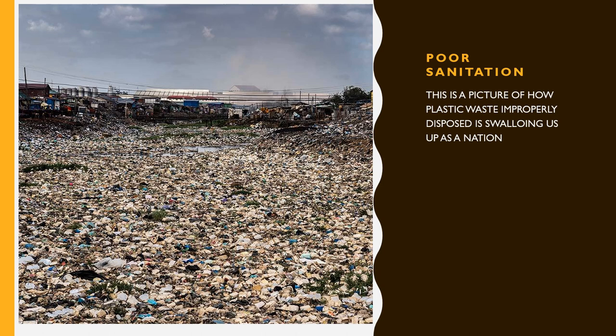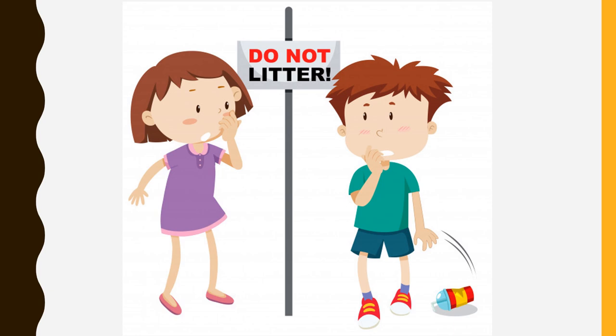Another topical issue for us to consider is poor sanitation. Let's take a look at this picture. Can you live around such a place? I bet you'll be sick in no time. Do you know how it all started? Let's take a look at the next picture and see where it began. Garbage has been littered at a place where a signpost says 'do not litter.' We tend to be disobedient, hence poor sanitation.